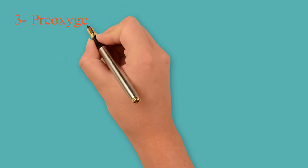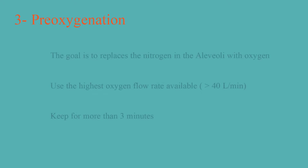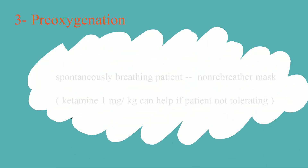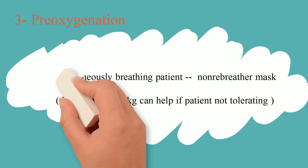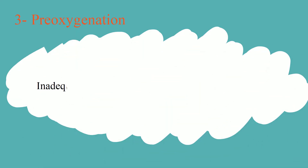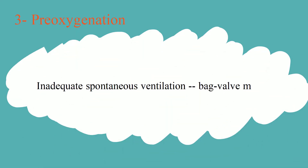Third step is pre-oxygenation. The goal is to replace nitrogen in the alveoli with oxygen, using 100% oxygen delivered at the highest available flow rate — ideally more than 40 liters per minute — and for at least 3 minutes. For a patient with adequate spontaneous ventilation, use a non-rebreather mask. You can add ketamine 1 mg per kg in an agitated patient; this will allow effective pre-oxygenation without depressing respiratory drive. If the patient has inadequate spontaneous ventilation, use bag valve mask.